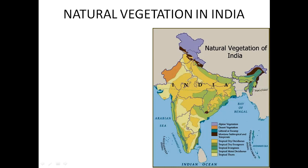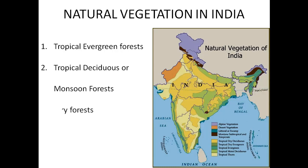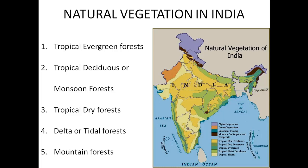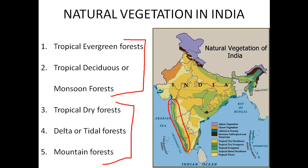Now we learn about the distribution of natural vegetation in India and their types: tropical evergreen forest, tropical dry forest, delta or tidal forest, and mountain forest. The first two are mainly controlled by the distribution of rainfall in India, and the last three by topography. As you can see in the map of India, tropical evergreen forest is mainly confined to the windward side of the Western Ghats and northeastern India, while tropical deciduous or monsoon forest is mainly confined to the leeward side of the Western Ghats and central India. In this session Part 1, we will discuss the first two types of forest.